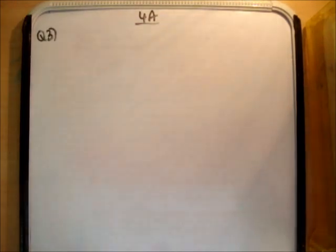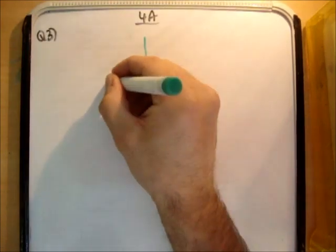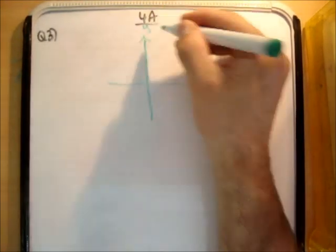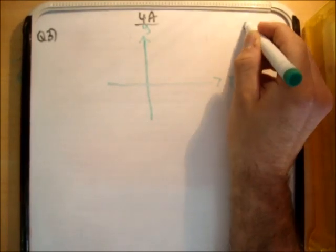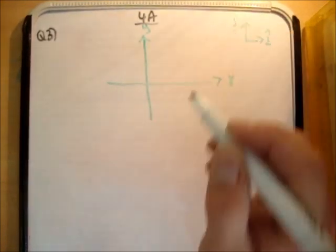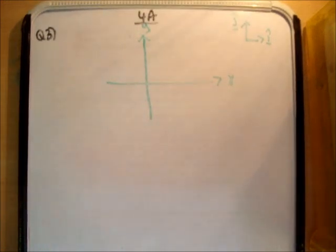The first thing we need to do is draw our Cartesian plane. So draw the y-axis and the x-axis. We draw our unit vectors, i hat and j hat.